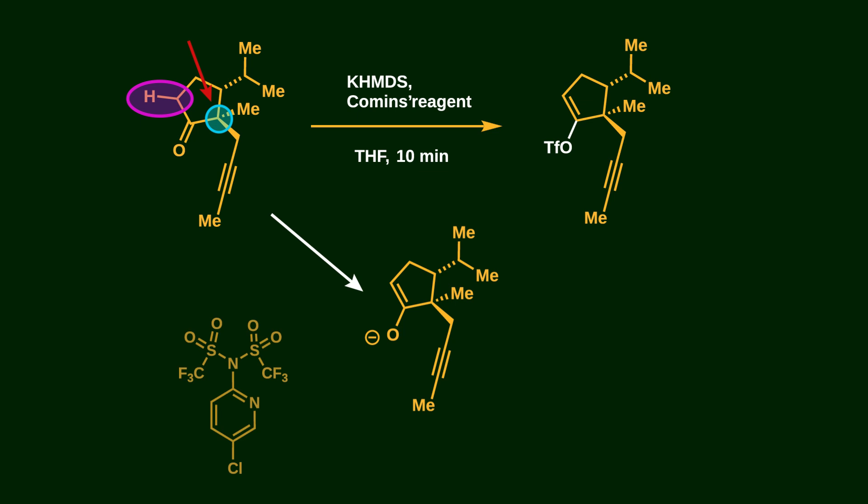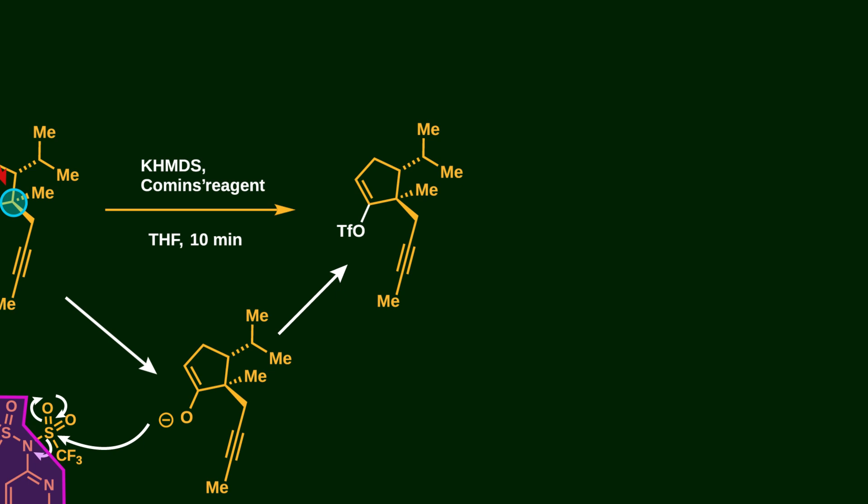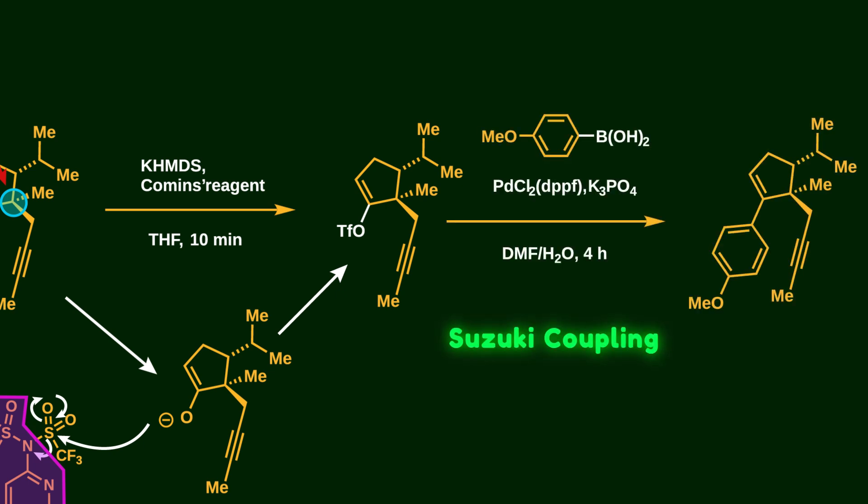Next, the nucleophilic oxygen attacks a sulfur atom in Comins' reagent, and then the rest of the Comins' reagent acts as a good leaving group, leaving us with the vinyl triflate.